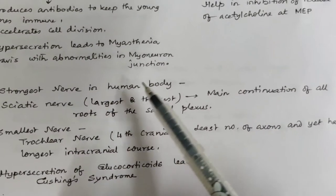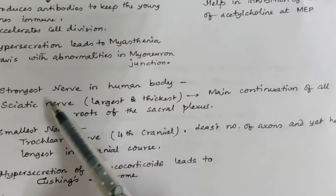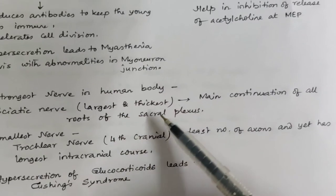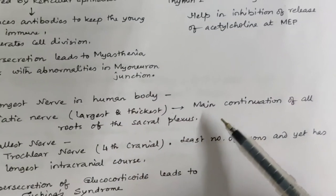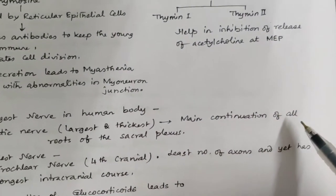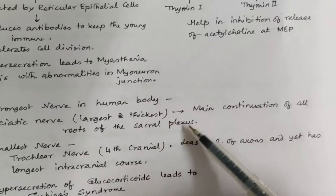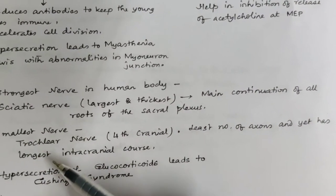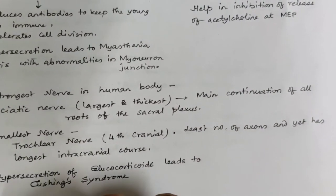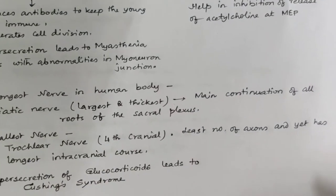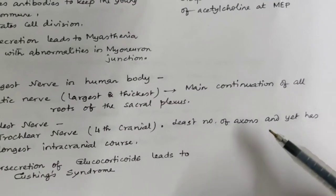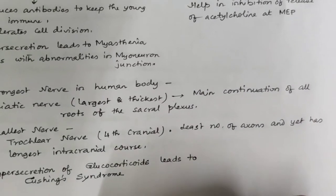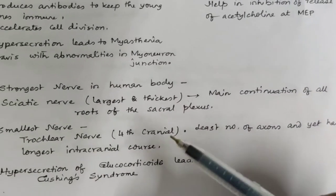Which is the strongest nerve in the human body? It is the sciatic nerve — the largest and thickest nerve, and the main continuation of all roots of the sacral plexus. The smallest nerve in our body is the trochlear nerve, which is the fourth cranial nerve. It has the least number of axons and yet has the longest intracranial course.